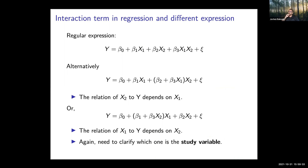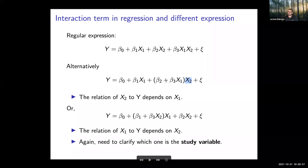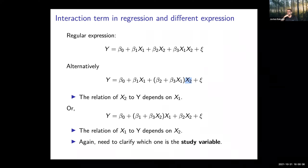With beta_1*x_1 and beta_2*x_2 you have your main effects, whereas the interaction is interpreted with a third coefficient and the conjoined x_1*x_2. Alternatively, you can express it with an intercept, main effects, and here beta_2 is the coefficient of x_2, beta_3 is x_1, so the relationship between x_2 and Y now clearly depends on x_1.